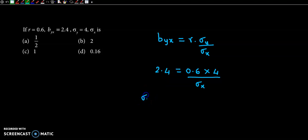Here, standard deviation of x is left. So standard deviation of x is 0.6 into 4 divided by 2.4.